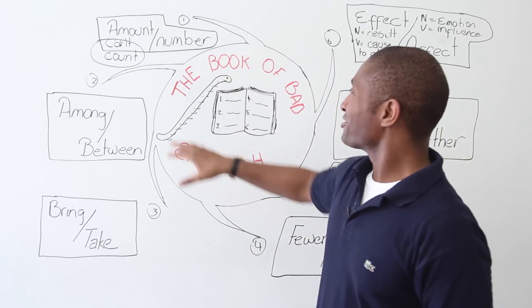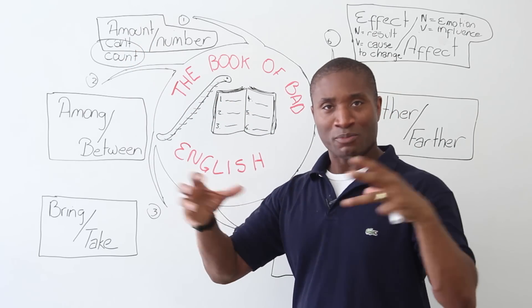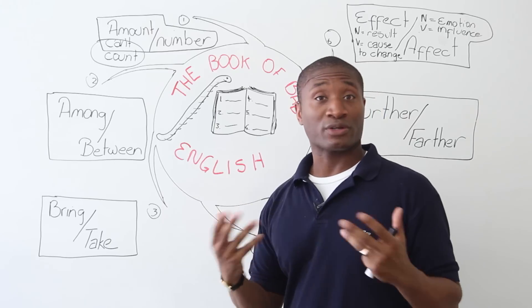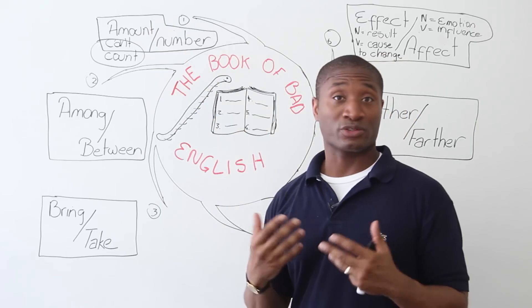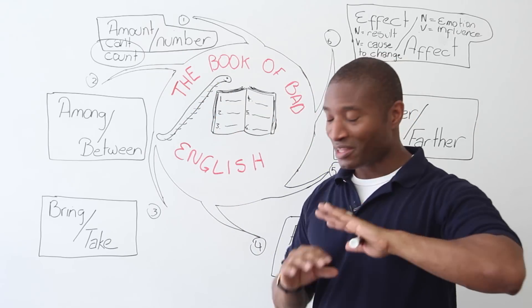You can't count amount. That rhymes. Maybe that'll help, right? You can't count amount. So when you want to talk about a number of something or a body of something, amount is for things you cannot count, and number is for things you can count. English people make this mistake a lot.